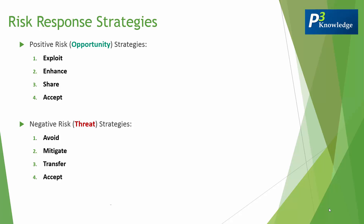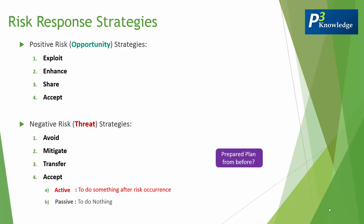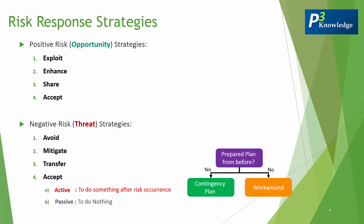However, there is one more part to accept for the negative risk — we have active and passive acceptance. Active acceptance means to do something after risk occurrence, while passive acceptance means to do nothing. For active acceptance, when the risk materializes, if you have prepared a plan beforehand to deal with it, that's called a contingency plan. However, if you did not have one and on the spot you improvised a way to deal with that risk, it's called a workaround. And if your contingency plan did not work out and you have a secondary plan — normally called plan B — here it's called a fallback plan.